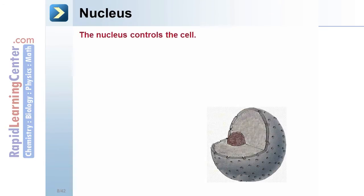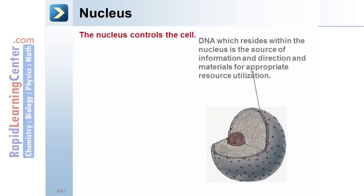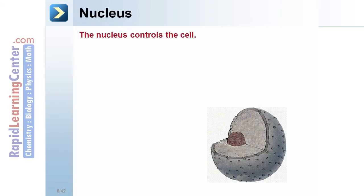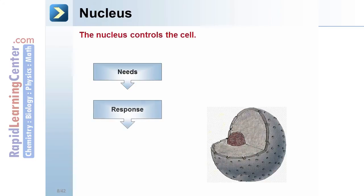The nucleus controls the cell. DNA, which resides within the nucleus, is the source of information and direction and materials for appropriate resource utilization. It determines the response. The DNA contains the instructions.